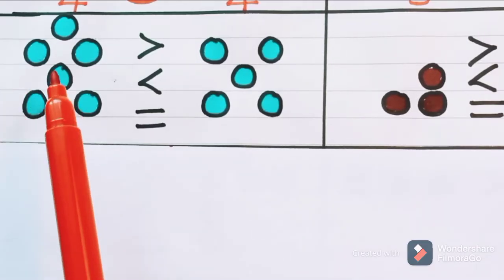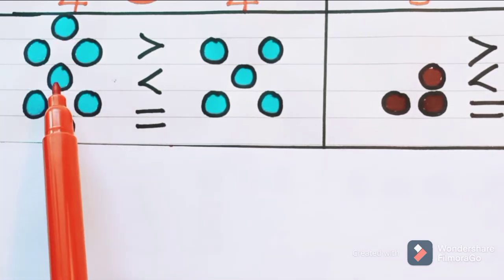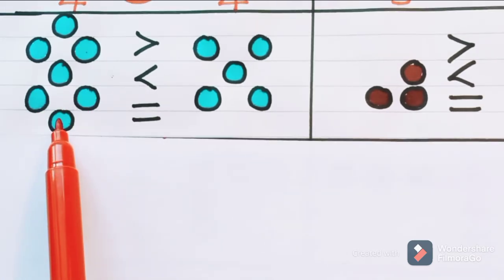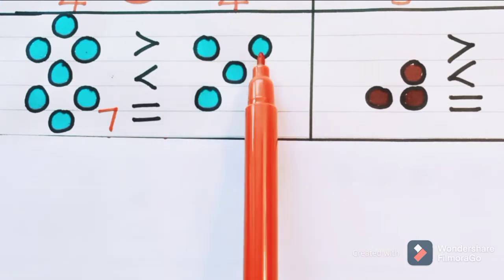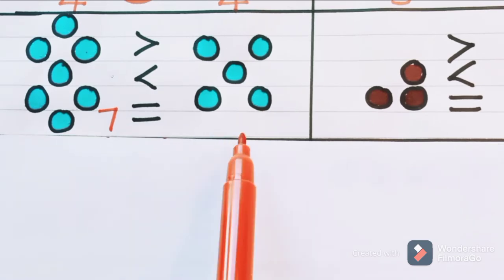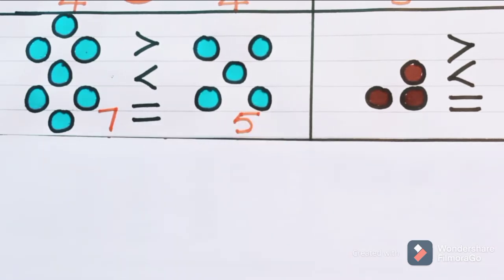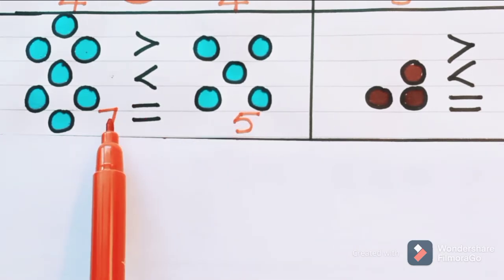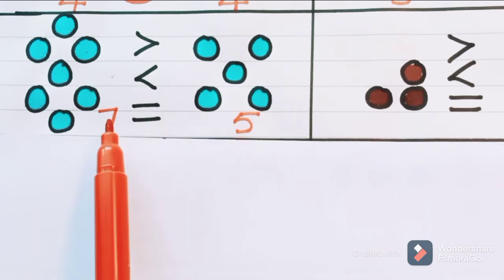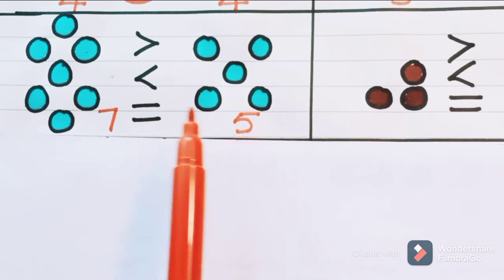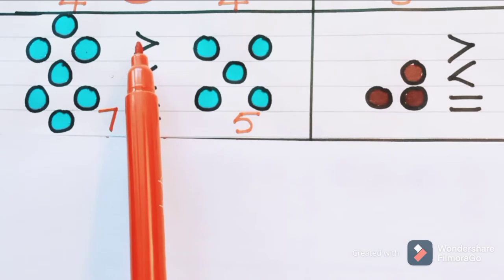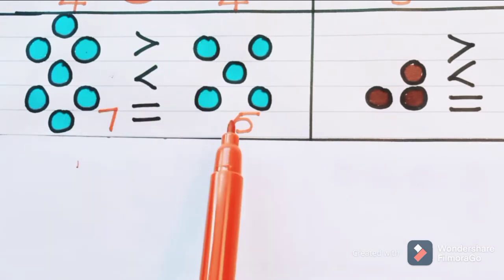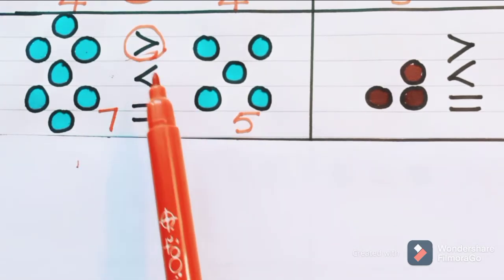Now look at here. How many circles do we have? One, two, three, four, five, six, seven — there are seven circles. Now how many circles here? One, two, three, four, five — there are five circles. When comparing with the number five, the number seven is bigger. Seven is bigger than five. Seven is the bigger number and five is the smaller number. So for bigger numbers, we use greater than symbol. Seven is greater than five.